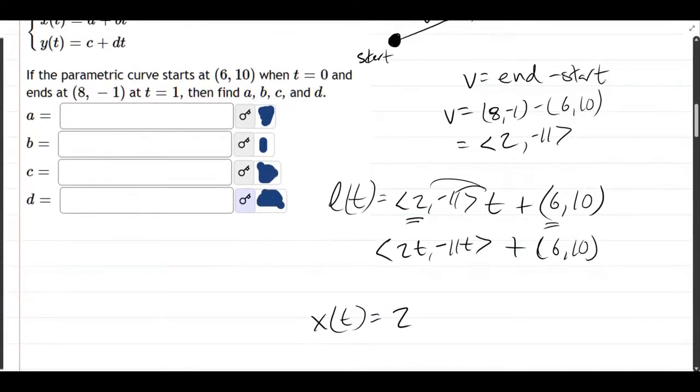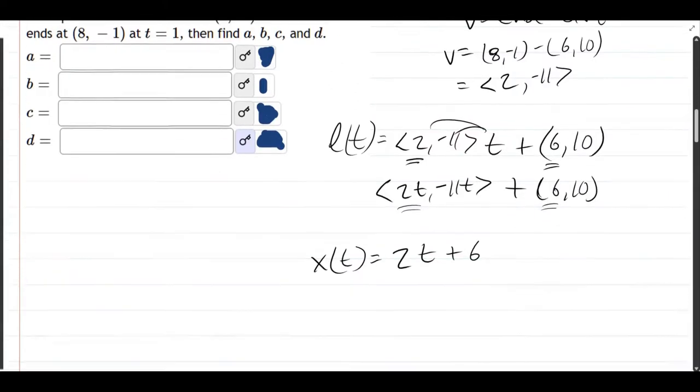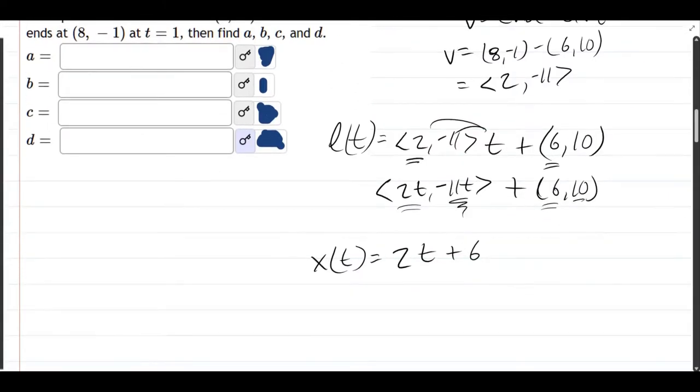Now x is the first coordinate of each of these added together, so it's 2t plus 6. And y is the second coordinate right there. This is still L(t). So just the y's by themselves are negative 11t plus 10.